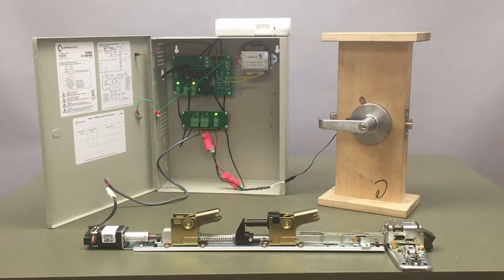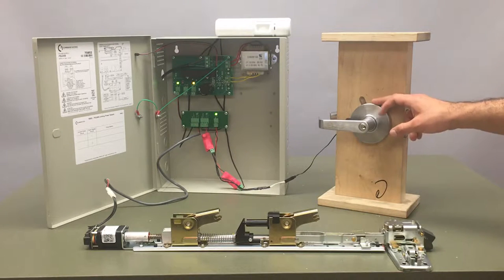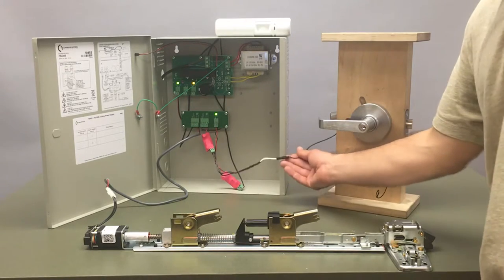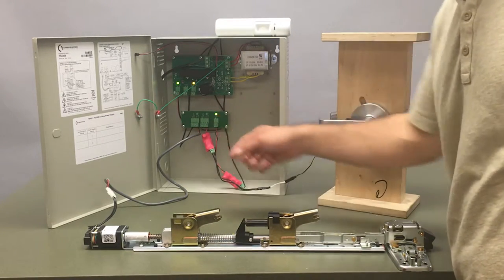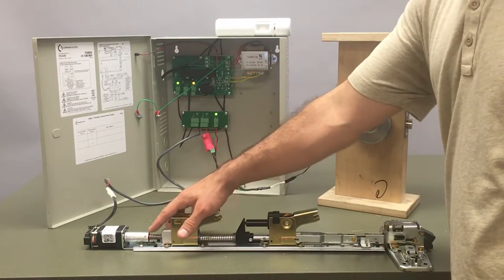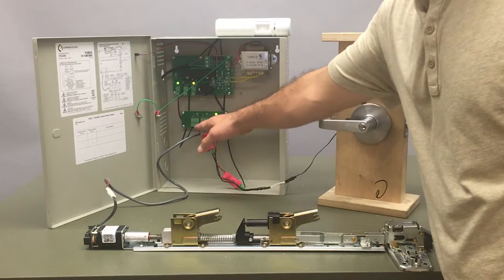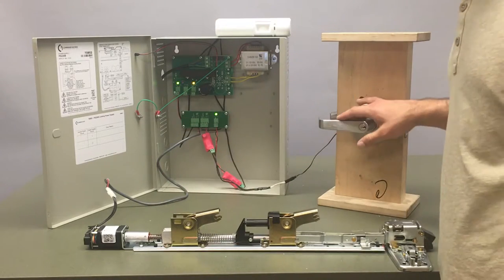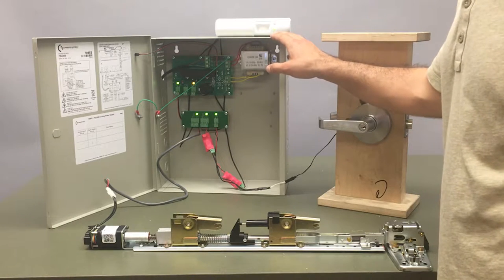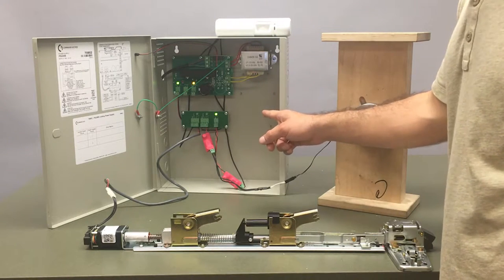My setup today consists of our CL180 12 volt cylindrical lock powering off of one output, and off the second output I'm powering our VLPM kit which is a 24 volt device. This is the new PS220B power supply which does come with a power tap which I'm powering this MotionRex off of, which is 12 volts as well.